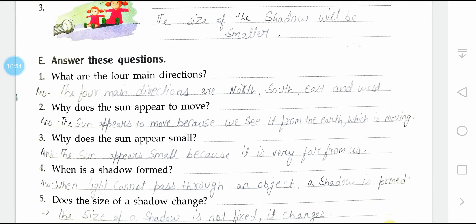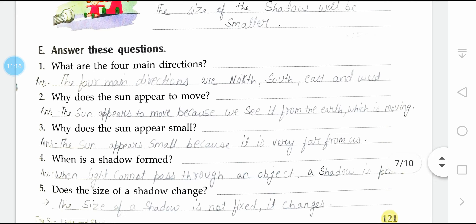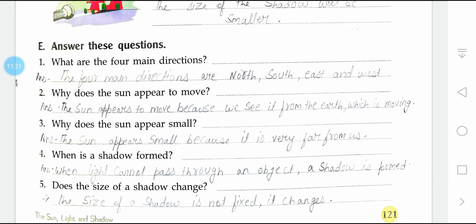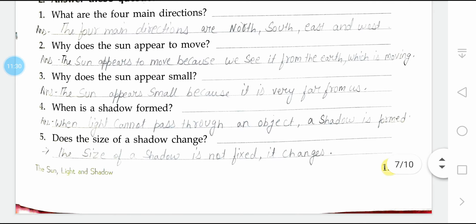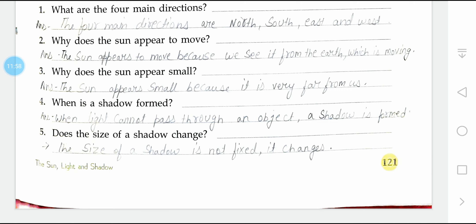Question answers: What are the four main directions? The four main directions are north, south, east, and west. Why does the sun appear to move? The sun appears to move because we see it from the Earth which is moving — Earth move करता है, इसलिए sun move करता हुआ लगता है. Why does the sun appear small? The sun appears small because it is very far from us. When is a shadow formed? A shadow is formed when light cannot pass through an object — object light को block करता है तब shadow form होता है. Does the size of a shadow change? The size of a shadow is not fixed — it changes.